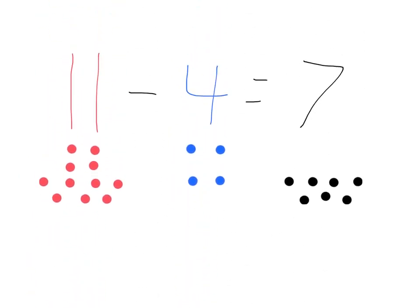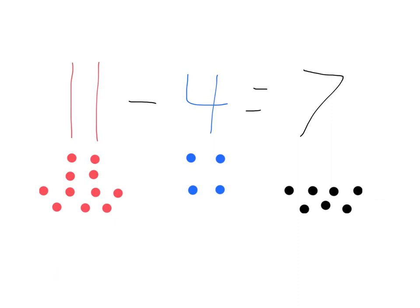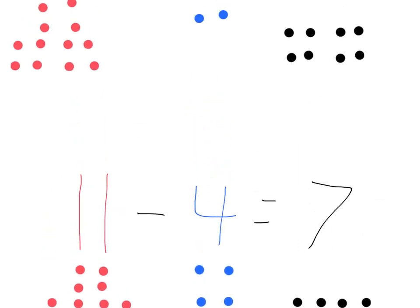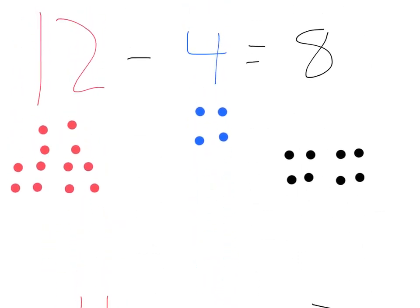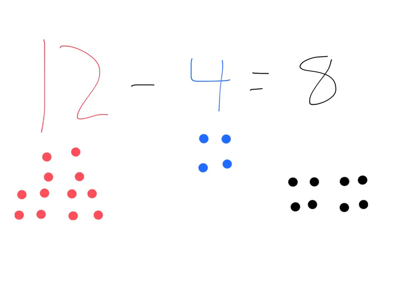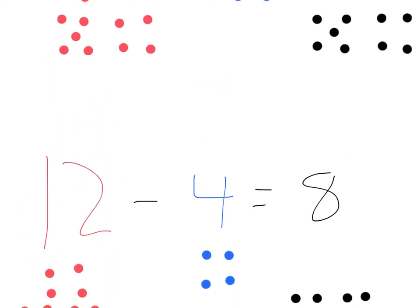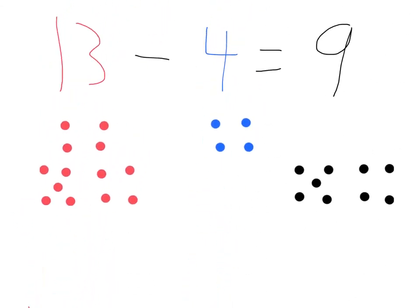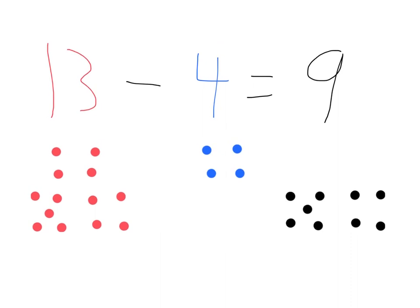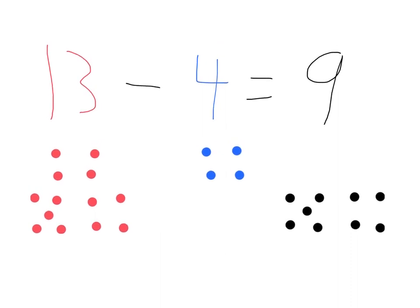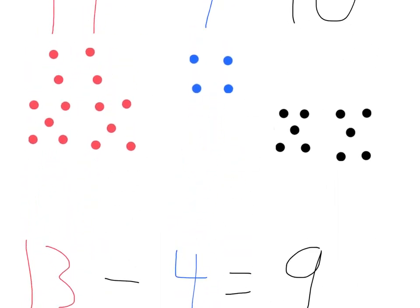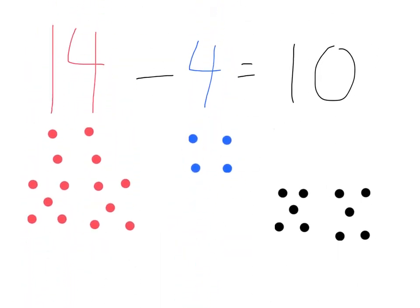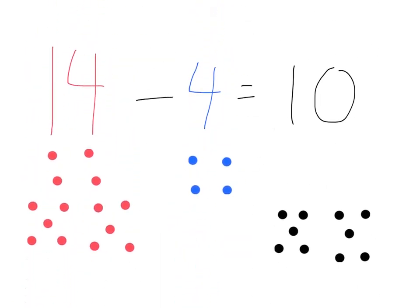11 minus 4 equals 7. 12 minus 4 equals 8. 13 minus 4 equals 9. And last, 14 minus 4 equals 10. All done!